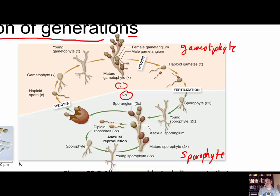Two kinds of gametes are produced, and both have flagella — it's not like a stationary egg. The larger gamete comes out of one of the gametangia with flagella, and so does the smaller one — the female and the male. What's interesting is that the female gamete releases a pheromone — a chemical released outside to attract other individuals — that actually attracts the male gamete to find it. When the male gamete finds it, they fuse together, the nuclei combine forming a diploid nucleus, and now we have our sporophyte generation beginning to grow.